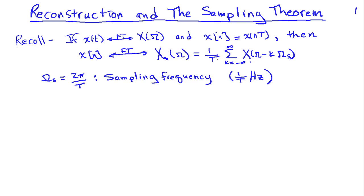is given by 1/T times the sum from k equals minus infinity to infinity of shifted versions of the original signal Fourier transform, and the amount that these versions are shifted by is ωs, which is 2π/T, and that's the sampling frequency. In terms of hertz, we would talk about the sampling frequency as being 1/T.